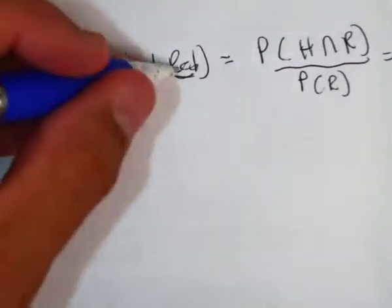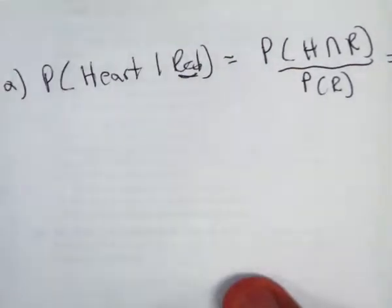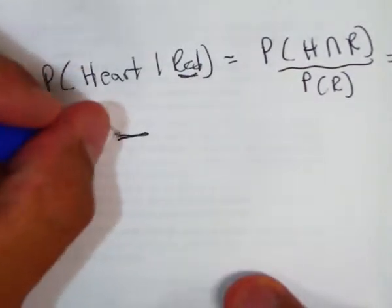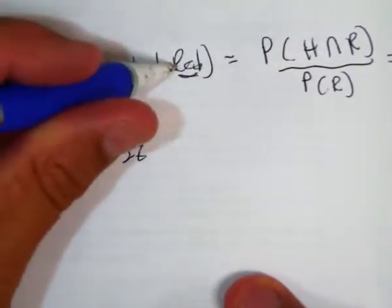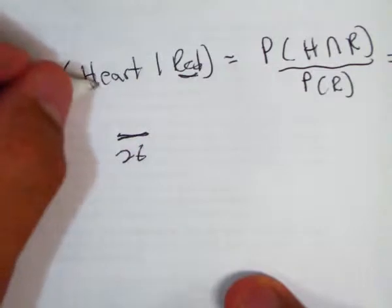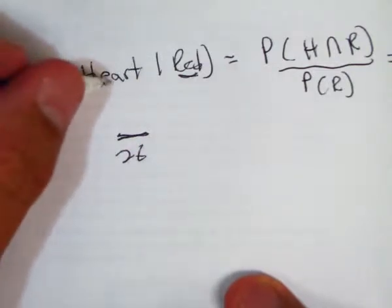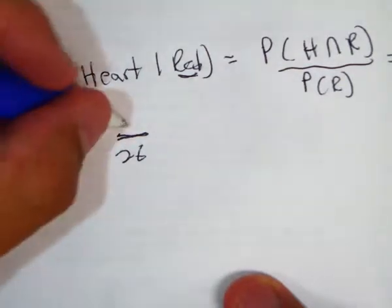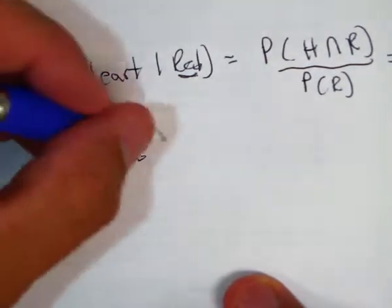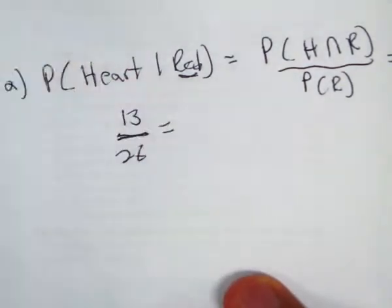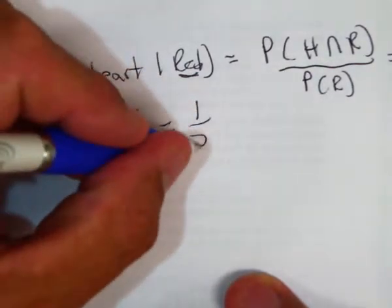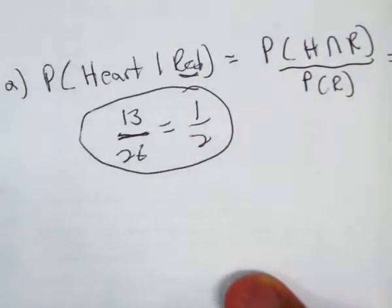Another way to think about this is just think of the red cards. How many red cards are there? 26. There are 2 suits in a deck — hearts and diamonds. So 13 of them are hearts given that they're red. So that would be 1 half. Just another way of thinking of it.